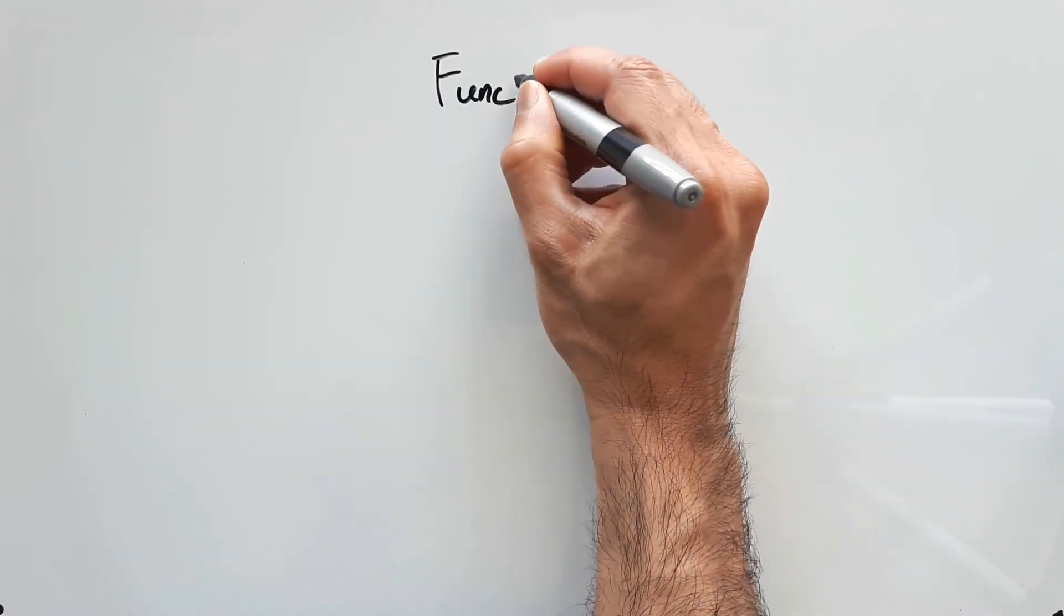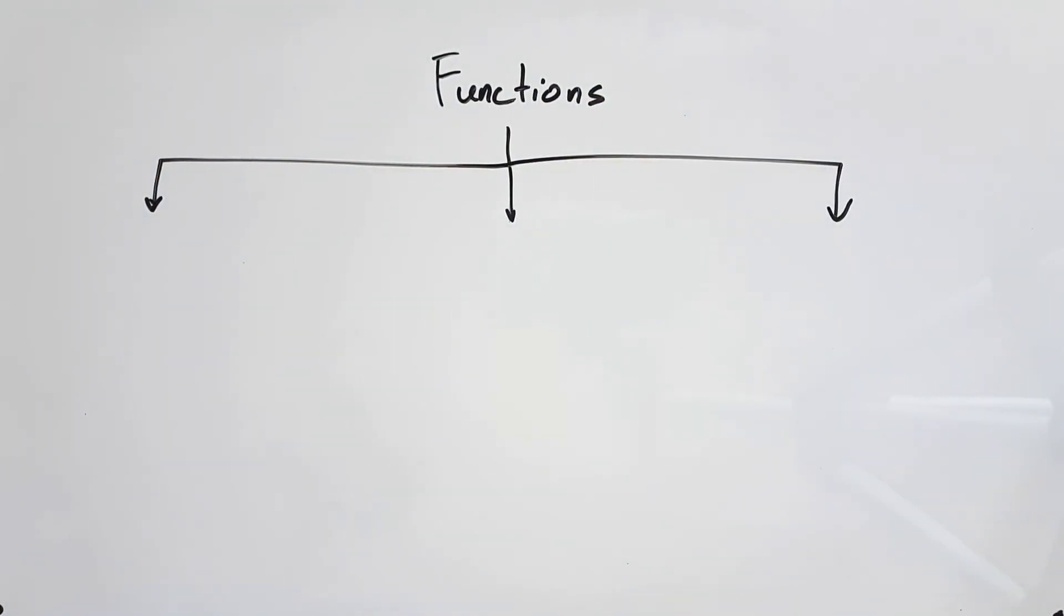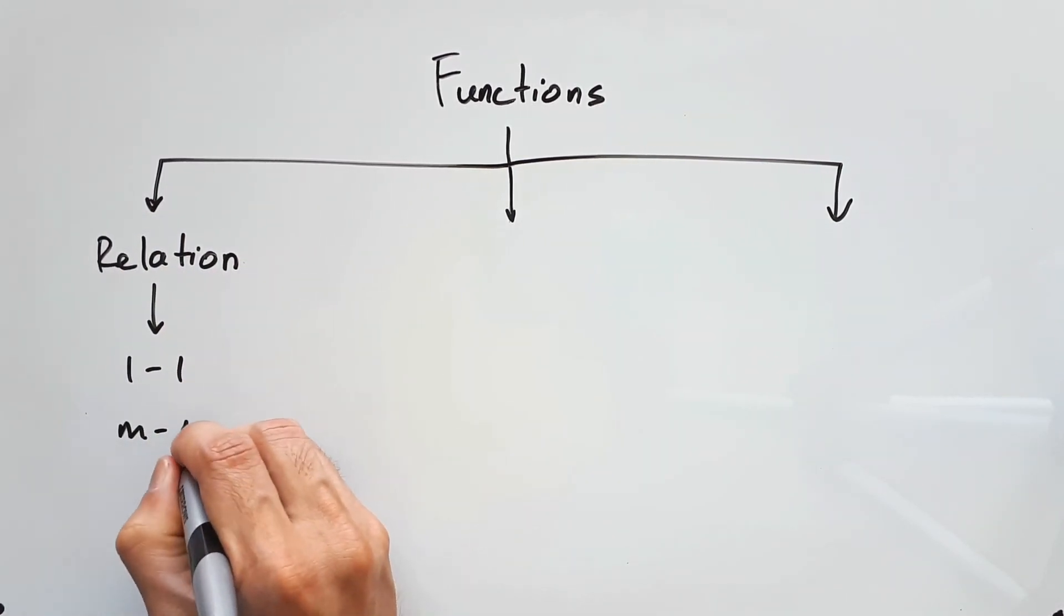So in summary, functions can be classified in three different ways. You can talk about them in terms of their relations, either being one-to-one like a straight line or a square root function, or many-to-one like a parabola.